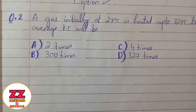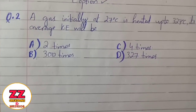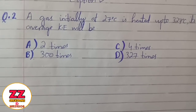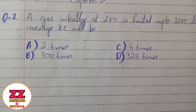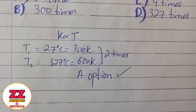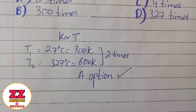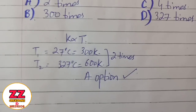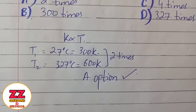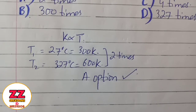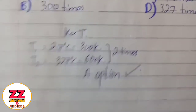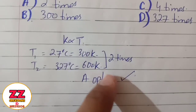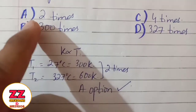Next question: A gas is initially at 27 degrees Celsius and is heated up to 327 degrees Celsius. What happens to its average kinetic energy? As we know, kinetic energy is proportional to temperature. Converting: 27°C = 300 K and 327°C = 600 K. This is double the value, so the kinetic energy will also double. Option A is correct.